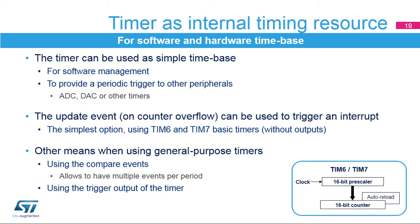The simplest use case for a timer is to provide an internal time base, commonly used by software routines for periodic interrupts or single-shot timeout protection. The timer can also provide periodic triggers to other on-chip peripherals such as the ADC, DAC, and other timers through the interconnect matrix. An update event from the timer, typically on counter overflow, is the usual means to trigger a software time base interrupt or periodic event. Basic timers TIM6 and TIM7 are best suited for such tasks, as they are the simplest derivatives with no input-output channel. Multiple timing events can be generated with a single timer using multiple compare channels.